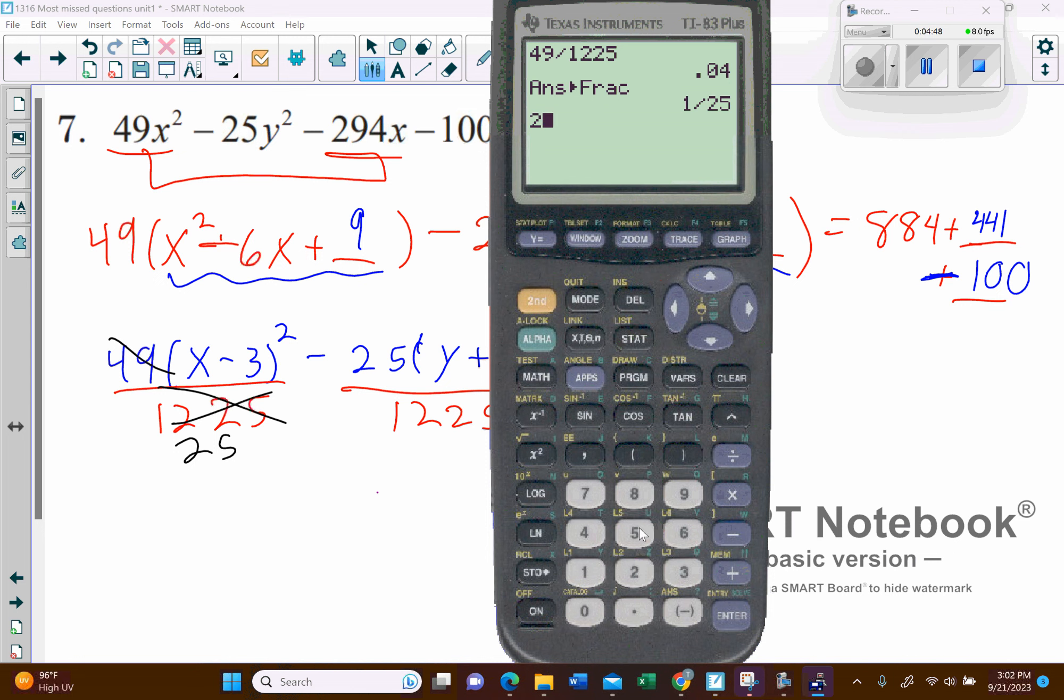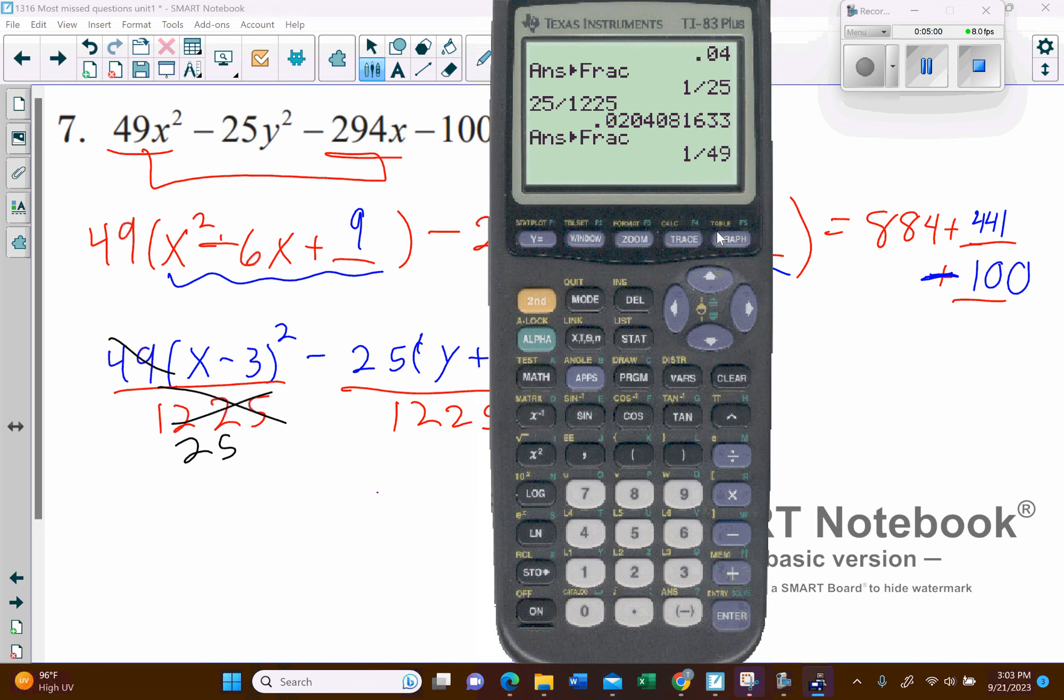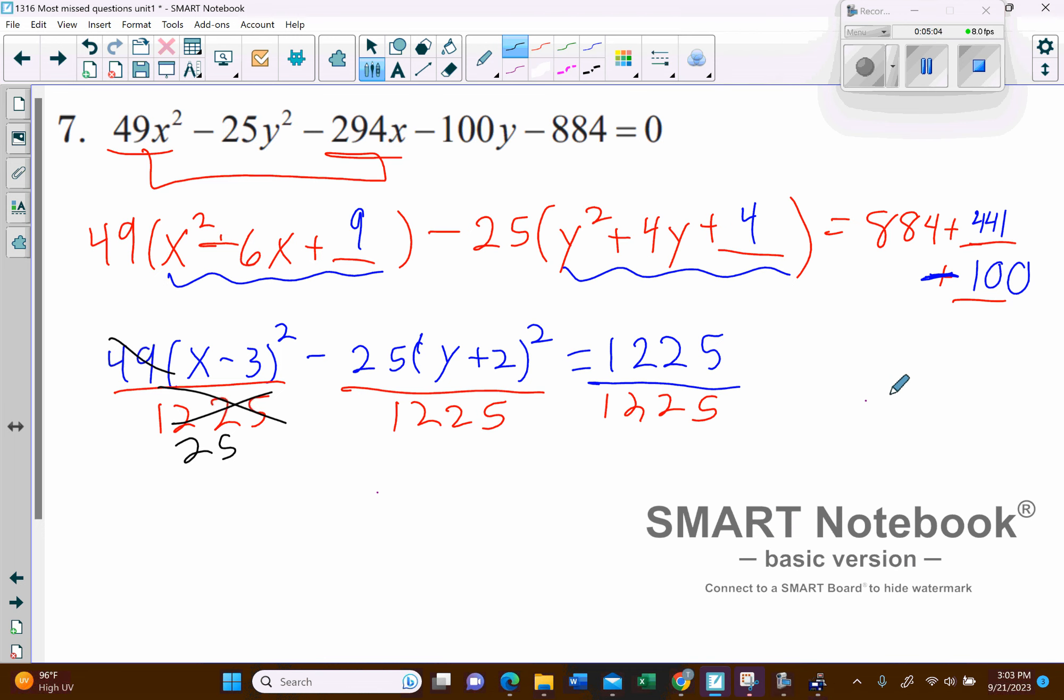So we're going to do 25 divided by, well, 25, it'll probably be 36 or something like that. Let's see, press enter, and then I have to press math, convert to a fraction, oh, 49. So, so that would reduce to a 49 there.